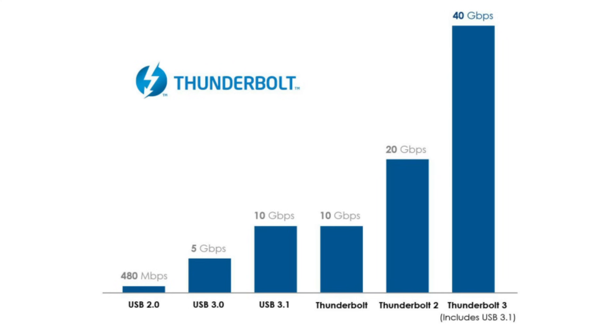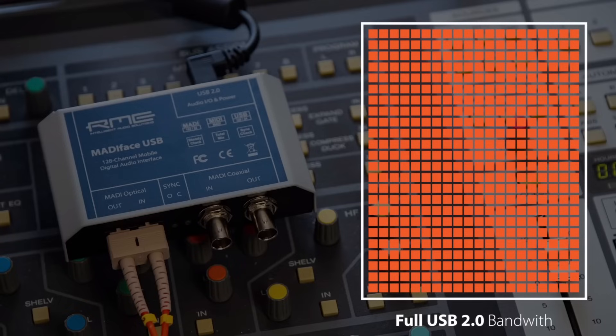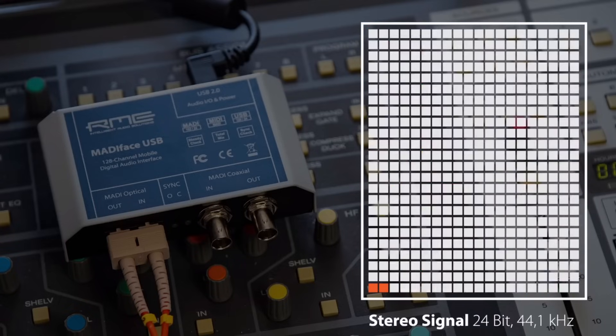There's no doubt that Thunderbolt has greater bandwidth than USB. And higher bandwidth means lower latency and better performance, right? Well, actually, the answer may surprise you. So stick around, because in this video I'm sharing three reasons why I'm personally choosing to stick with a USB audio interface.